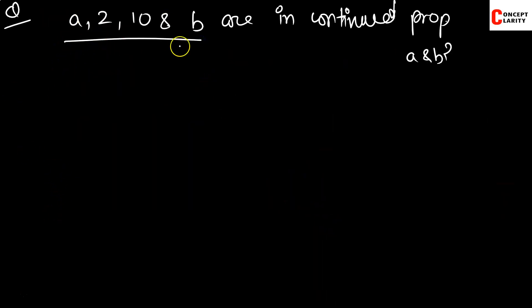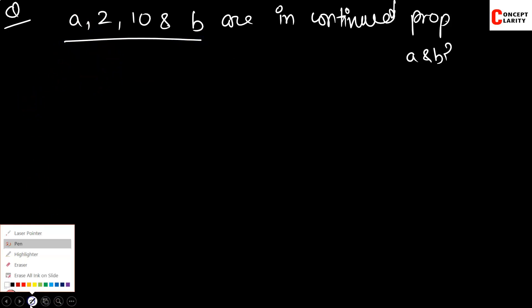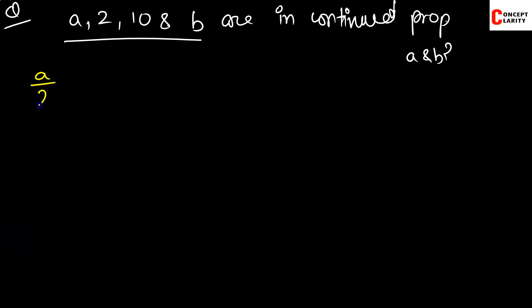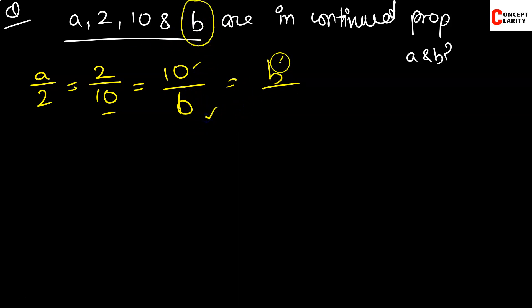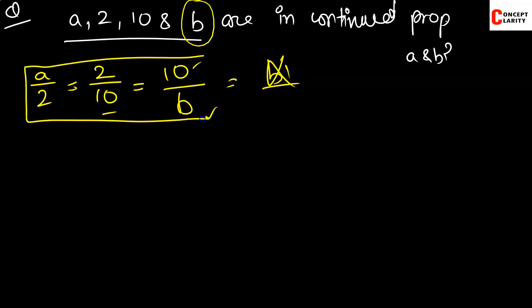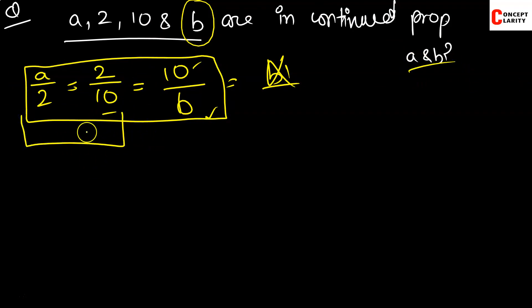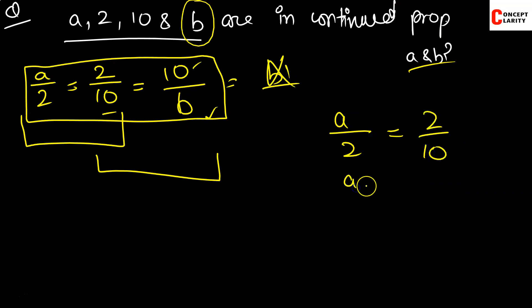We write A upon 2 is equal to 2 upon 10. Cross multiplying, A is equal to 4 upon 10, which simplifies to 2 is to 5, or 0.4. So the value of A is 0.4.